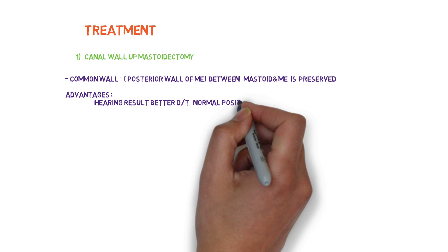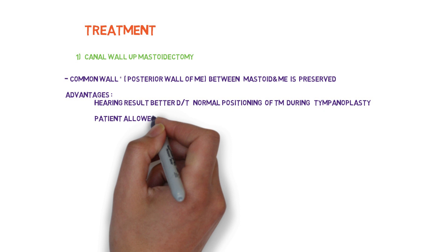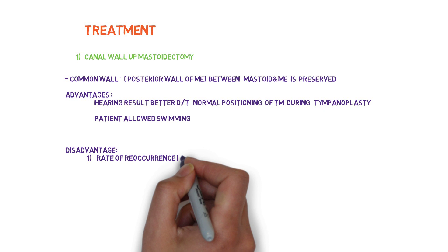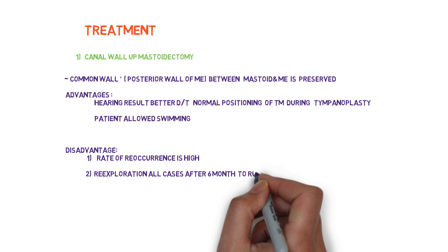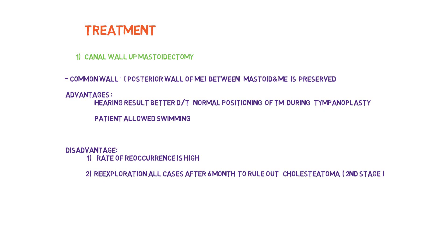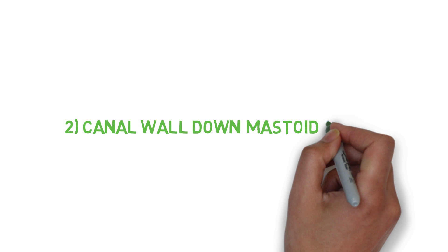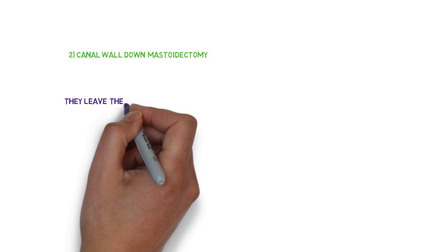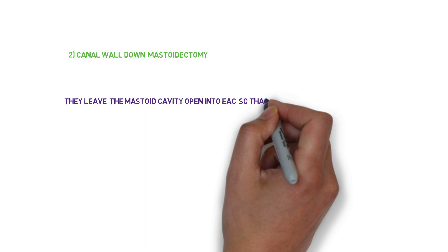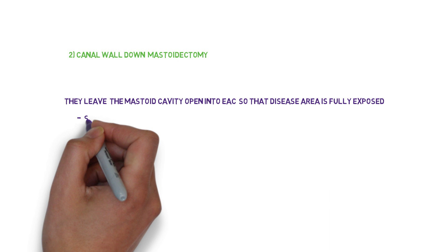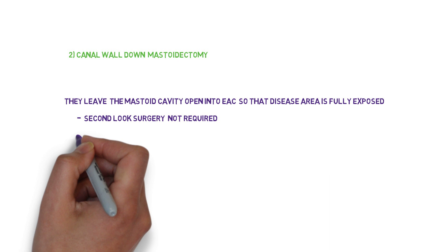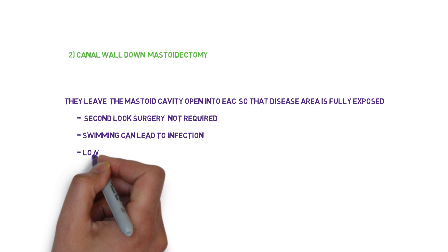Advantages of canal wall up mastoidectomy: hearing results are better due to normal positioning of the tympanic membrane during tympanoplasty, and patients are allowed to swim because the posterior wall of the middle ear prevents infection. Disadvantages: the rate of recurrence is high and re-exploration is required in all cases after 6 months to rule out residual cholesteatoma. Canal wall down mastoidectomy, in contrast, leaves the mastoid cavity open to the external auditory canal so the disease area is fully exposed. A second-look surgery is not required, but swimming can lead to infection due to no preservation of the posterior middle ear wall; the rate of recurrence is low. It is also called classical modified radical mastoidectomy.